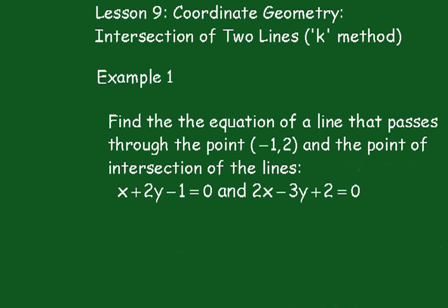Example 1: We have to find the equation of a line that passes through the point (-1,2) and the point of intersection of the lines x + 2y - 1 = 0 and 2x - 3y + 2 = 0.